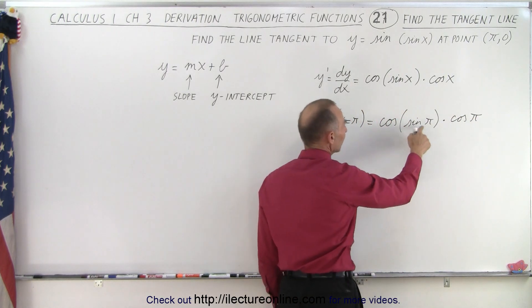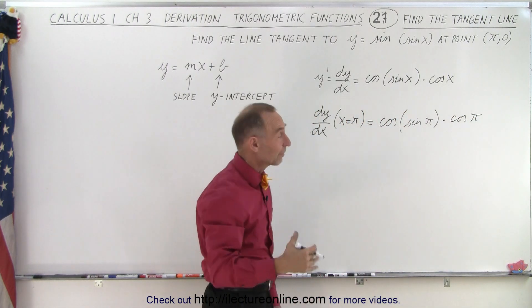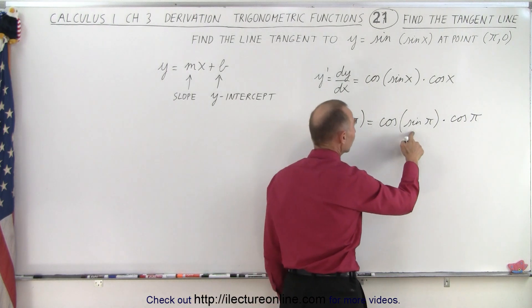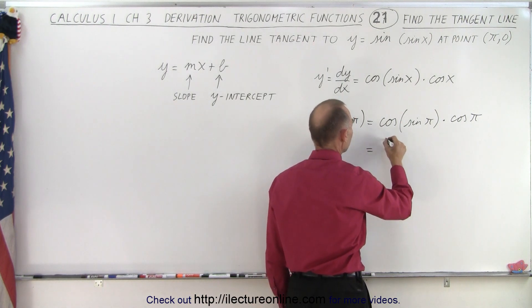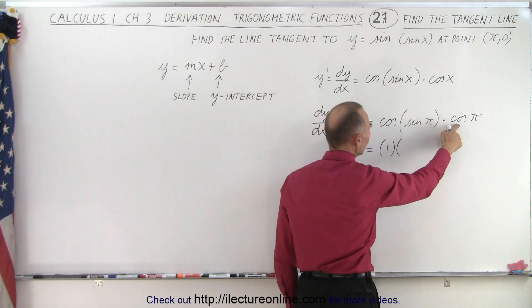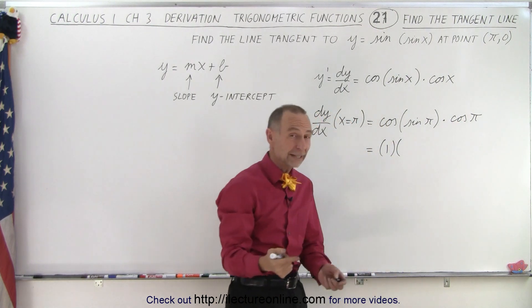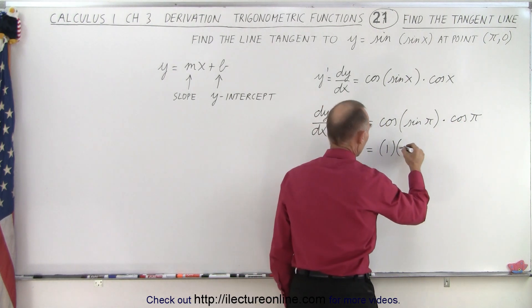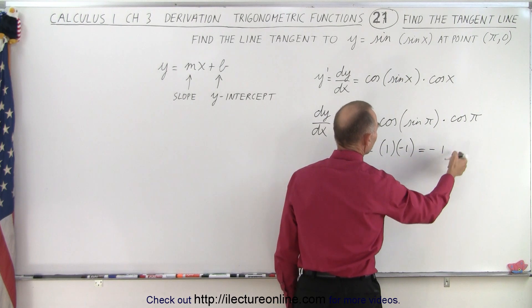All right, the sine of pi, that's 180 degrees, the sine of 180 is 0, but the cosine of 0, that's equal to 1. So this is equal to 1 times the cosine of pi. The cosine of 180 degrees is negative 1. So 1 times negative 1 equals negative 1.